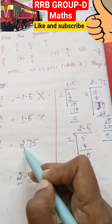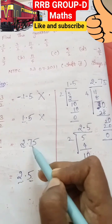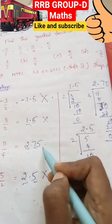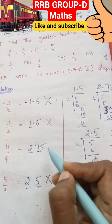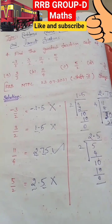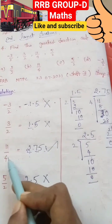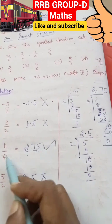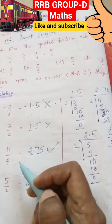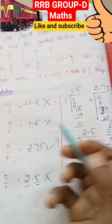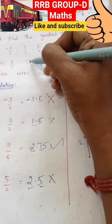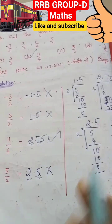So 2.75 — 7 is the greatest. 2.75 is the greatest fraction. This is the answer. So 11 by 4, fraction 11 by 4 is the greatest fraction. Option B is the answer.